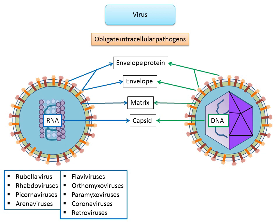One group of RNA viruses that deserves special mention is retroviruses, responsible for diseases such as acquired immunodeficiency syndrome — AIDS. We shall discuss that in a separate presentation.